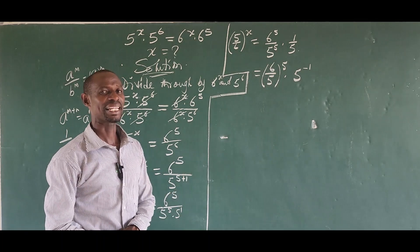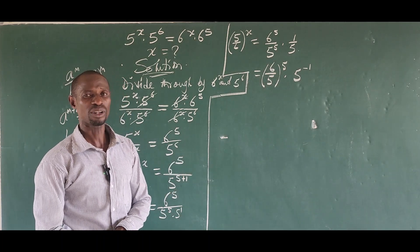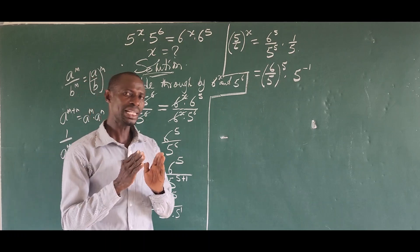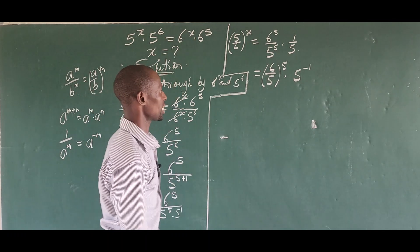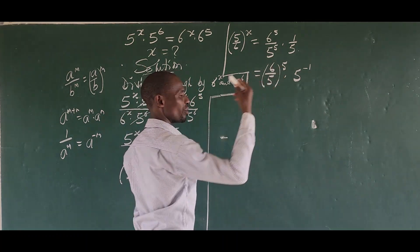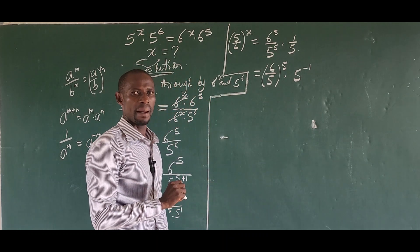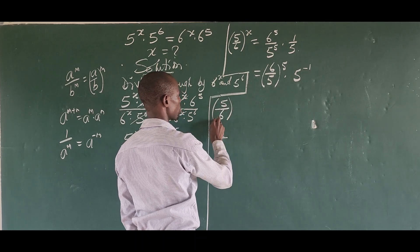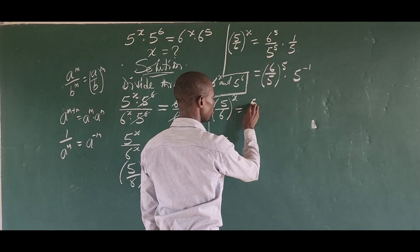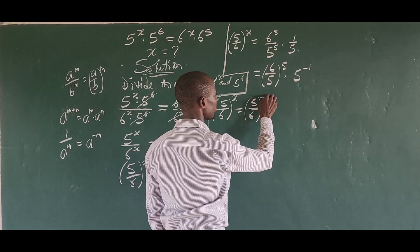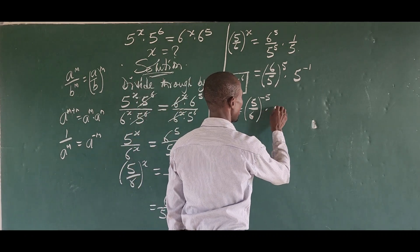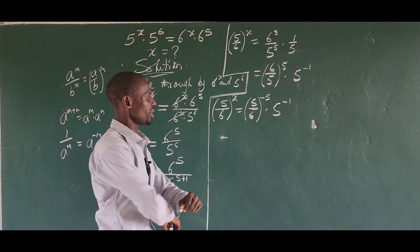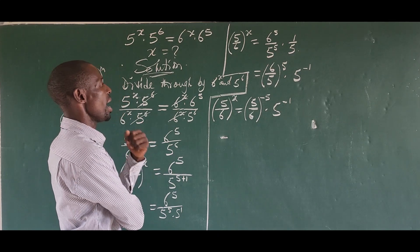Now we want the quantities inside the brackets to be the same on both sides. The left side has (5/6)^x but the right has (6/5)^5. We flip (6/5)^5 to get (5/6)^(−5). So the equation becomes (5/6)^x = (5/6)^(−5) · 5^(−1).